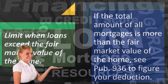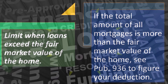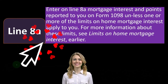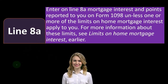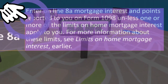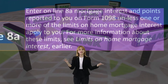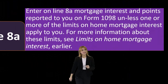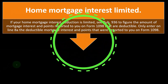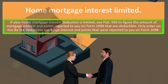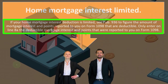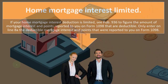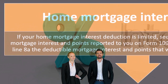But if the total amount of all mortgages is more than the fair market value of the home, you can see Publication 936. Then we have Line 8A: enter mortgage interest and points reported to you on Form 1098. That's the form you'll typically get from the financial institution, unless one or more of the limits on home mortgage interest apply to you. If your home mortgage interest deduction is limited, see Publication 936 to figure the deductible amount.